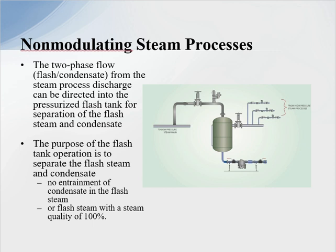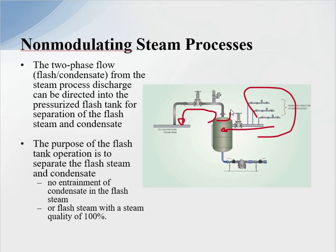Two-phase flow — flash steam and condensate from the steam process discharge — can be directed into a pressurized flash tank for separation of the steam and the condensate. Here we have high pressure or non-modulating loads from a process directed into this flash tank. The flash steam is separated from the condensate and delivered into a lower pressure system. The separation of flash and condensate allows no entrainment of condensate, giving us 100% steam quality coming out of the flash tank.